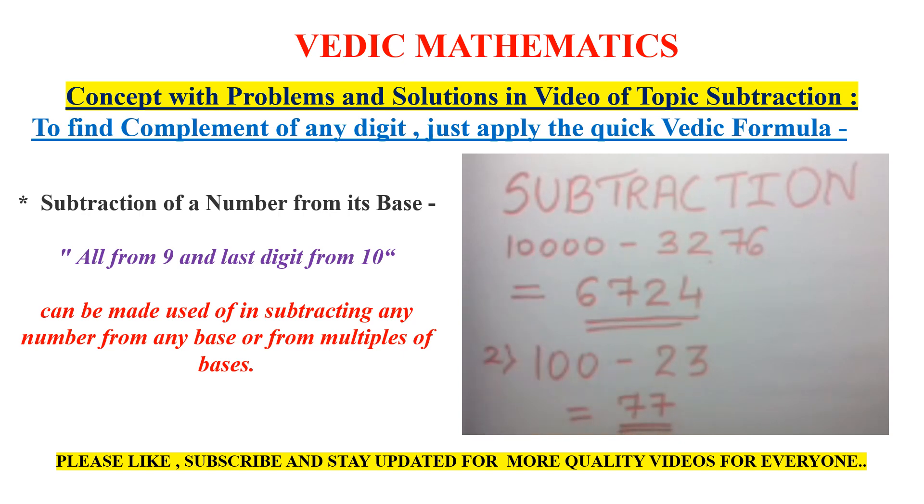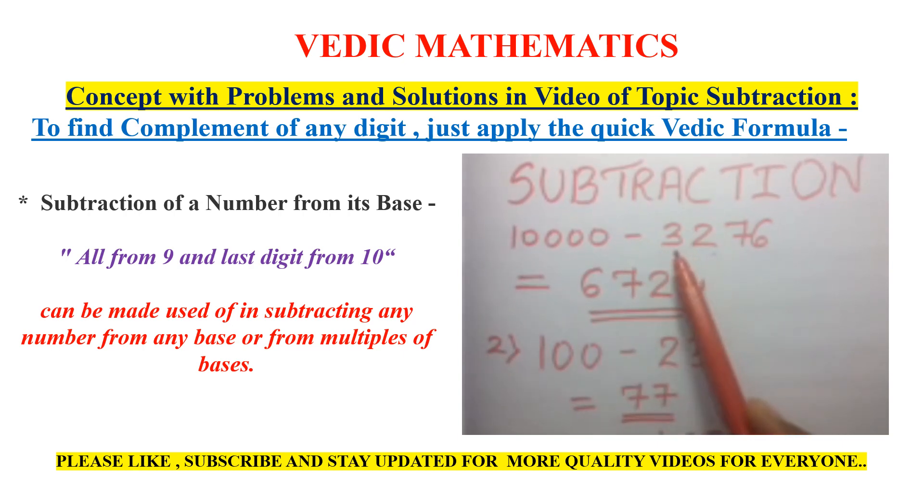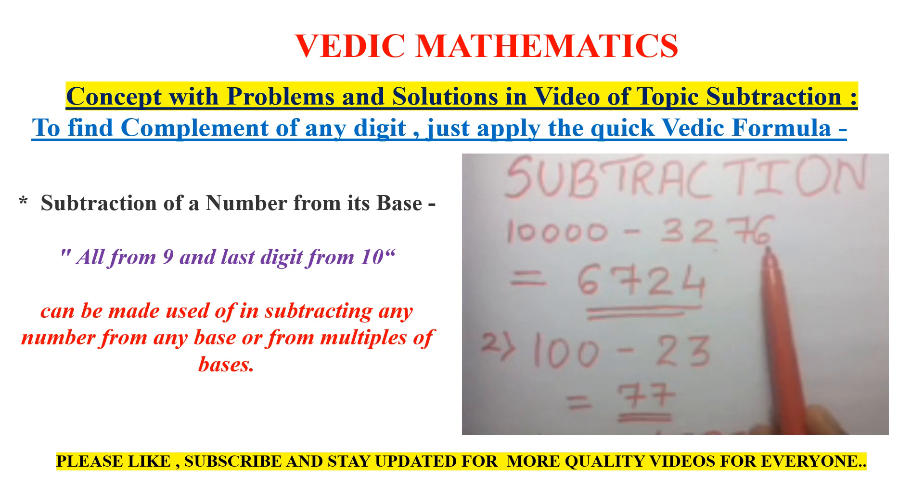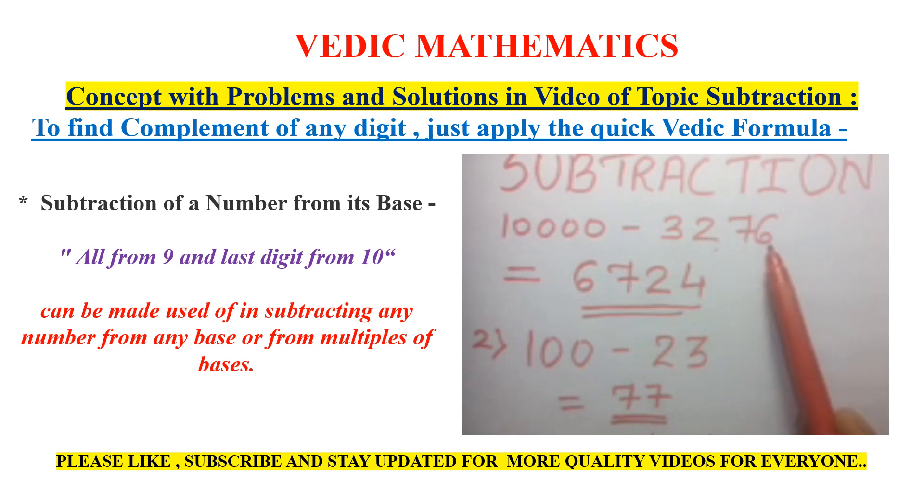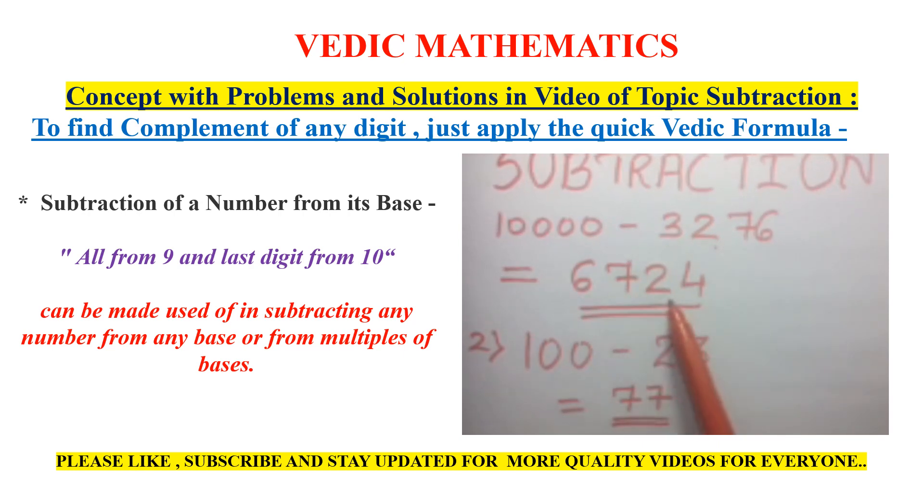We have taken 4 examples. Let's explain the first example. That is 10,000 minus 3276. We will take the answer. 3's complement is 6. All from 9 and last digit from 10. So 3 from 9 would be 6. 2's complement is 7. 7's complement is 2. And the last digit, 6's complement is 4. So the answer for the complement of 3276 is 6724.